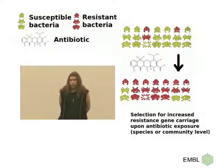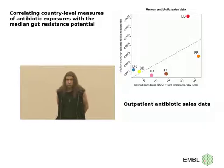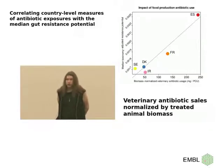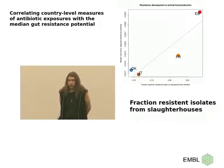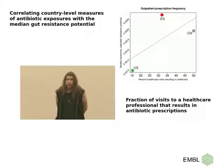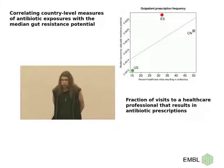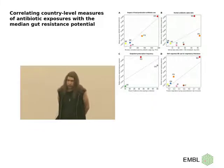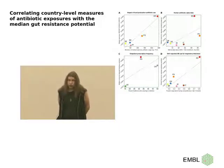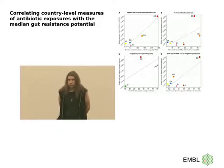In the meantime, what we can do and have done is look at country-level statistics of antibiotic exposure — including, for example, sales data of antibiotics for human medical use and for veterinary and food production purposes. We can look at the prevalence of antibiotic resistance in isolates taken from slaughterhouses in different countries as a proxy for the development of antibiotic resistance in the food production chain, or at what fraction of visits to healthcare professionals result in antibiotic prescriptions. These various measures of antibiotic exposure broadly agree with our country-level estimates of antibiotic resistance potential in the gut samples.